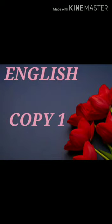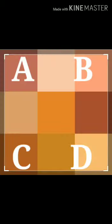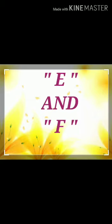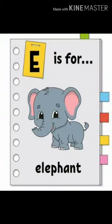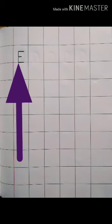Hello children, again I am back with the writing part. We have already written the English alphabets A, B, C, D. Today we will write the next two alphabets, that is E and F. E for elephant and F for fish. Let's see how to write.